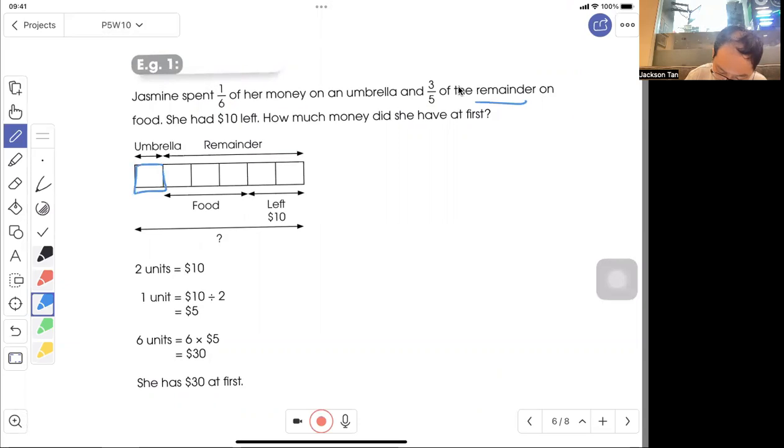Draw your model. 1/6 is spent on the umbrella, so this is 1 unit out of 6 units. The remainder is 5 units. Then 3 out of 5 of the remainder is spent on food. $10 is left.